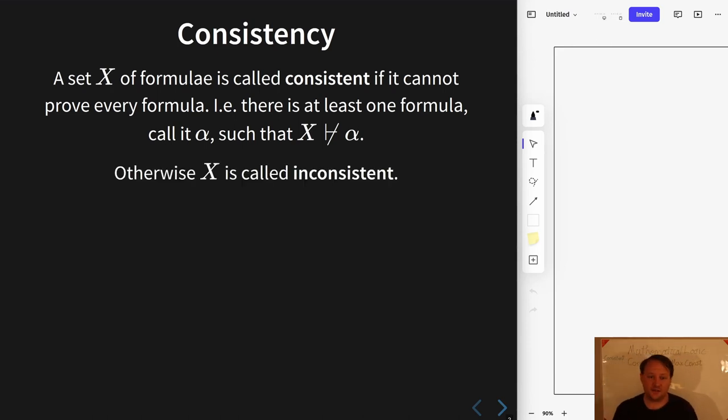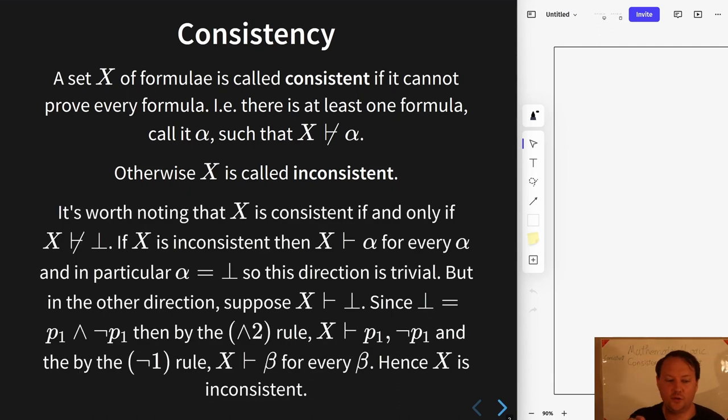And of course if X is not consistent we call it inconsistent. And it's worth noting that although the definition is stated about any formula, we could just as well have taken it to be the bot formula as well. So even fixing that one as the formula that it cannot prove, that would be enough. So let's give a quick rundown of why that is equivalent to the given definition.